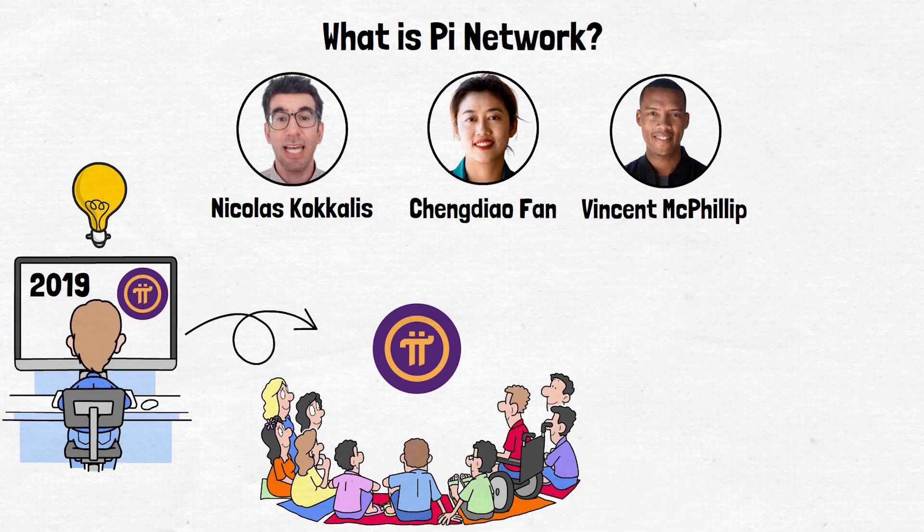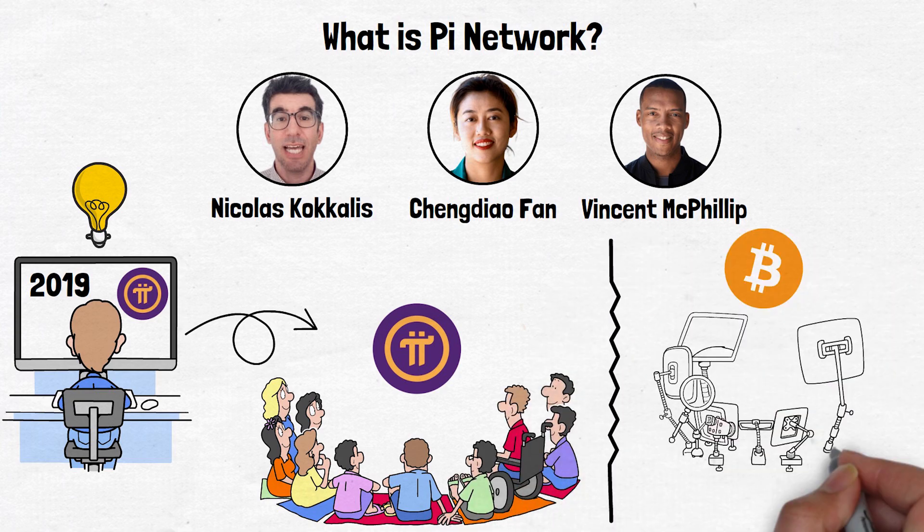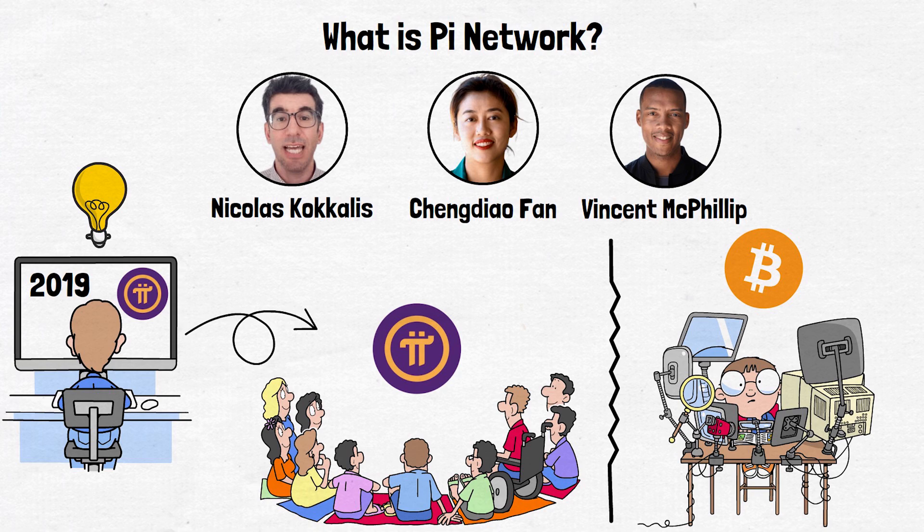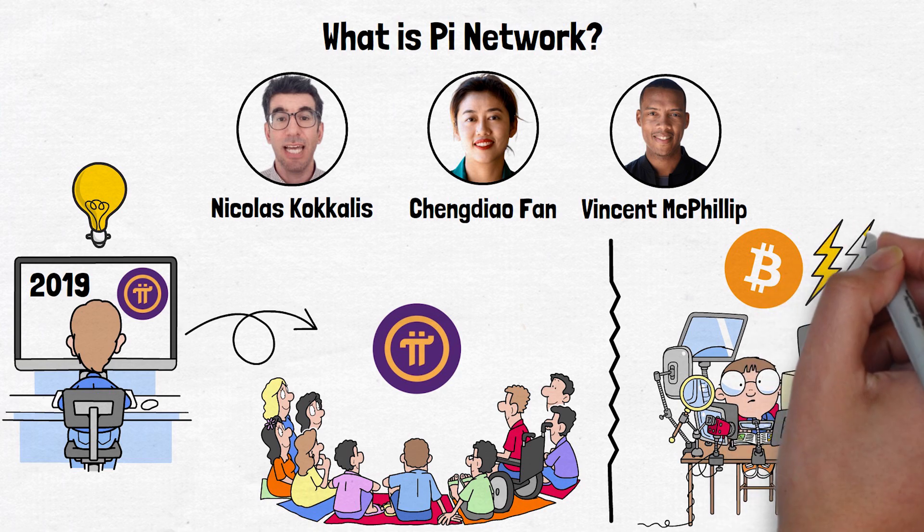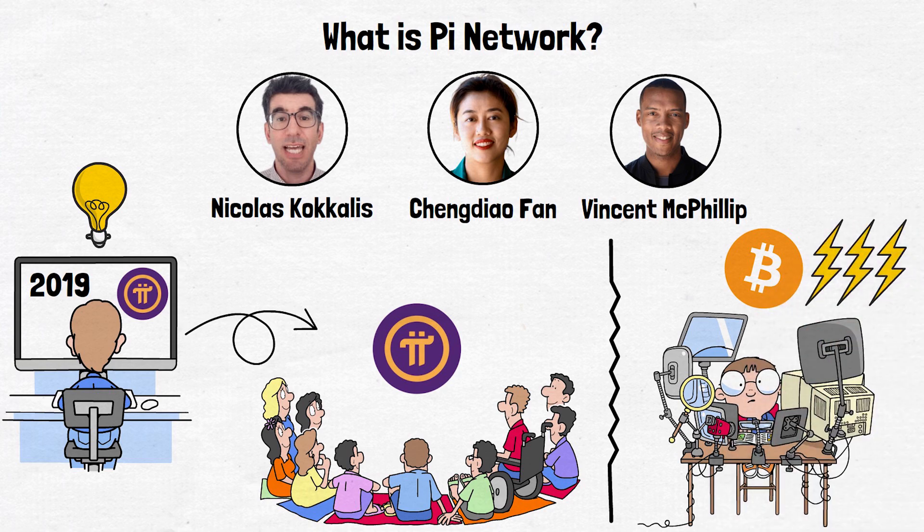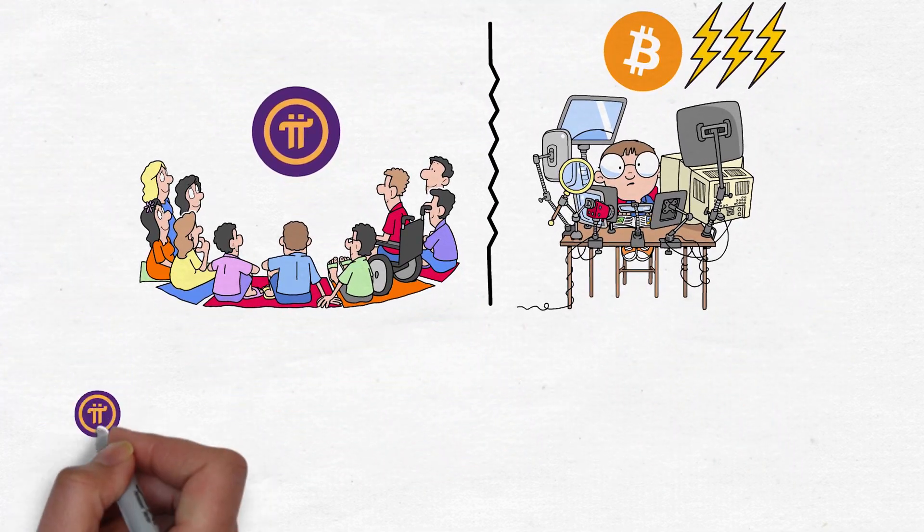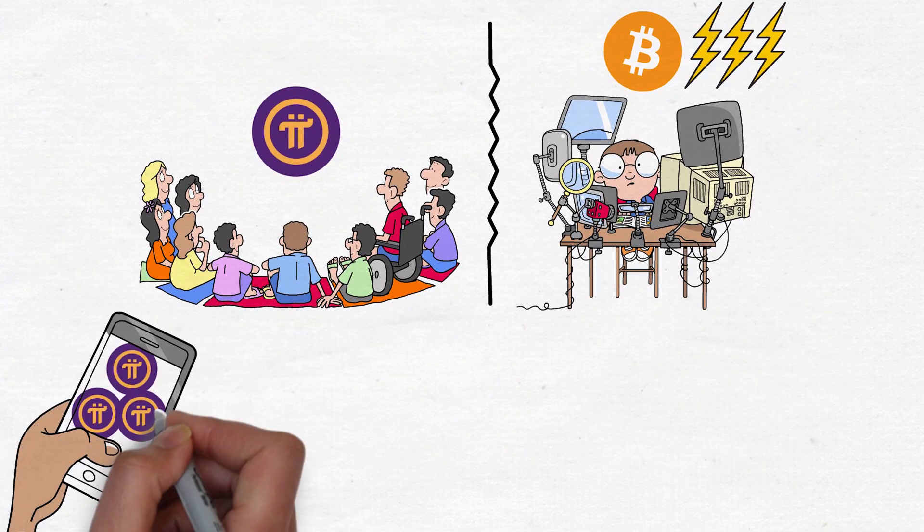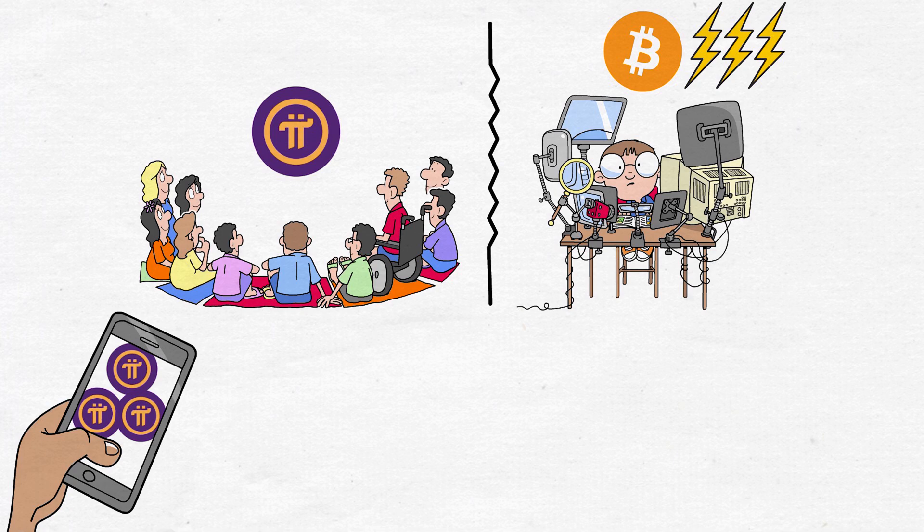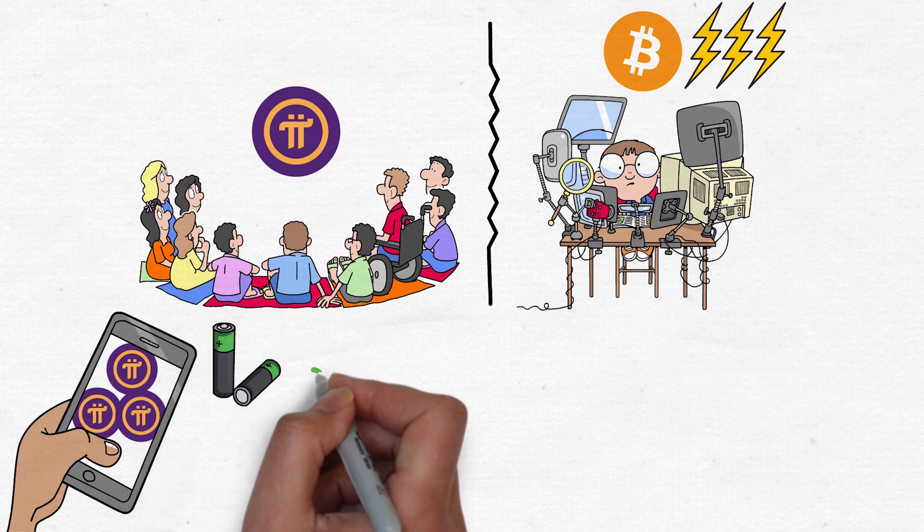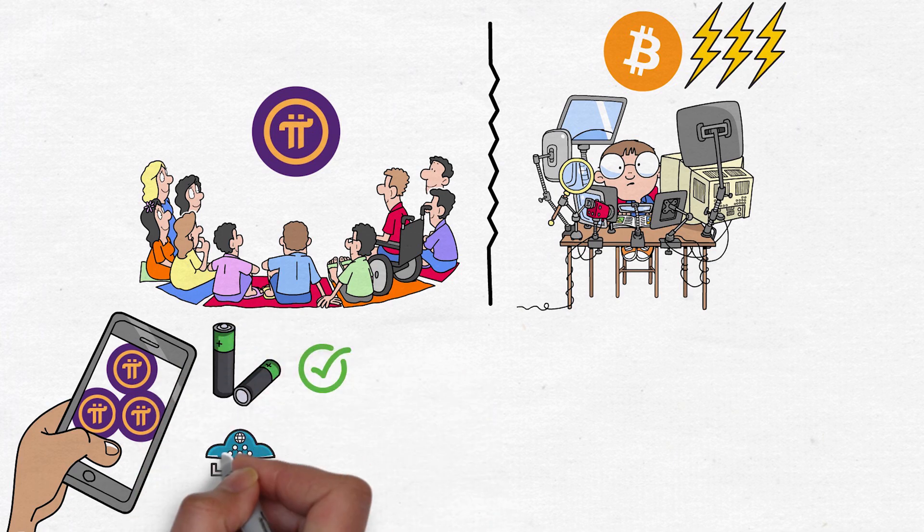While most popular cryptocurrencies like Bitcoin require specialized equipment for mining and consume enormous amounts of electricity, Pi Network takes a completely different approach. Here's the big idea: you can mine Pi Coins directly from your smartphone. And according to their website, there is no impact on your phone's performance, battery, or data usage beyond that of a regular app.